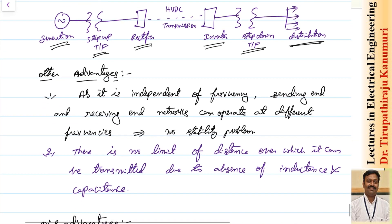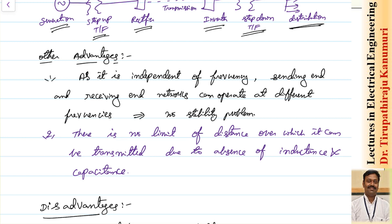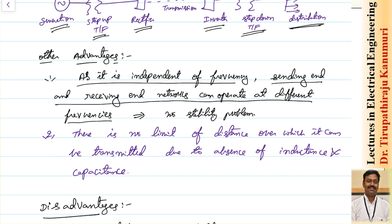Using this system, the advantages are: as transmission is DC, it is independent of frequency. So sending-end and receiving-end networks can operate at different frequencies. Interconnected systems operating at different frequencies and different voltages can be brought to the same voltage via transformer, converted to DC, and combined together. There is no problem of stability concern.